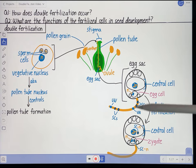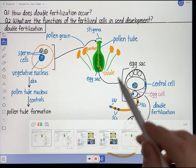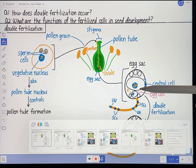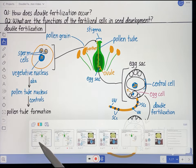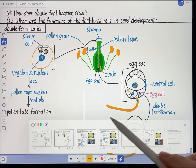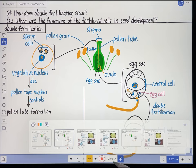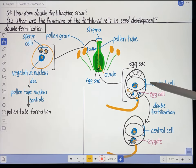What you're seeing here is the Explain Everything presentation for my double fertilization video. Right here you're seeing the visuals layout for the double fertilization part of the video — that's page 1 of 7. Then on the next page, that's the page where I have my recording for this part of the video. And this is at the end of the timeline, so you're seeing everything that will have appeared on the page by this point in the video.